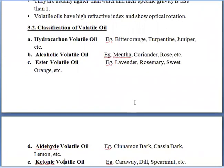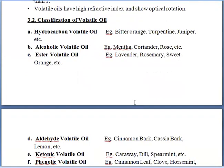Now we will study about the classification of volatile oils. We have classified volatile oils based on the functional group present in the volatile oil. For example, hydrocarbon volatile oils contain only hydrogen and carbon. The drugs that fall under this category include bitter orange, turpentine, and juniper.